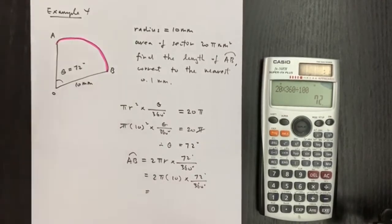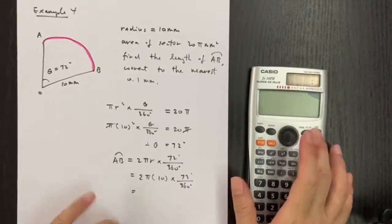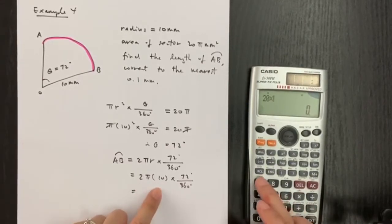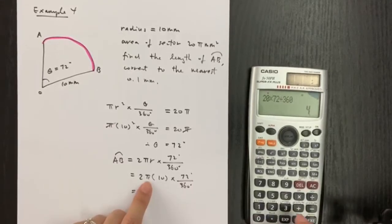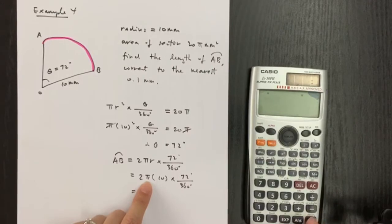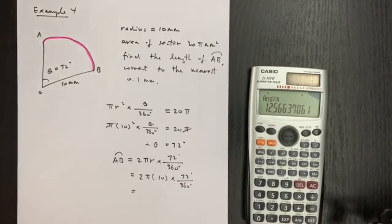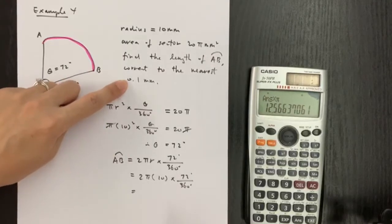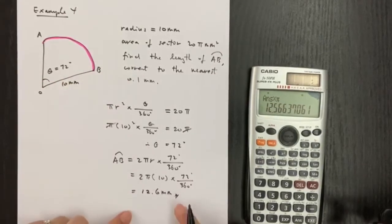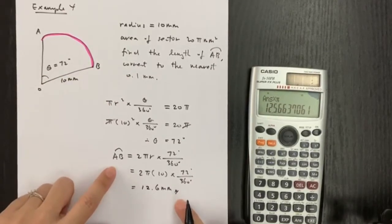Now that theta equals 72 degrees, I can find the arc length using the formula 2πr times 72 over 360, with r equals 10. That gives 2π times 10 times 72 over 360. Using the calculator: 20 times 72 divided by 360, then times π. The answer for arc length AB, correct to 0.1 mm, is 12.6 mm.